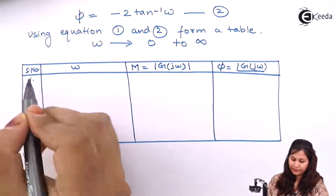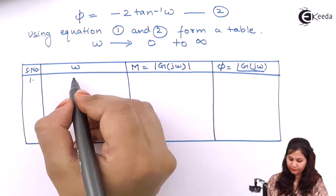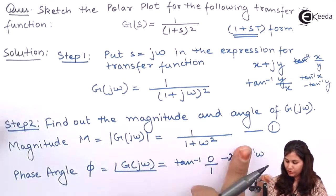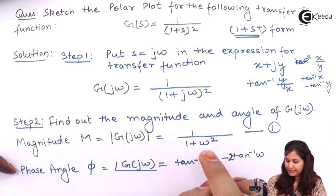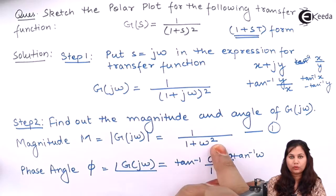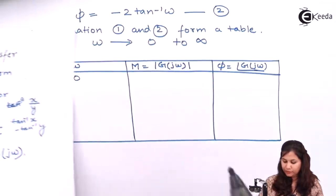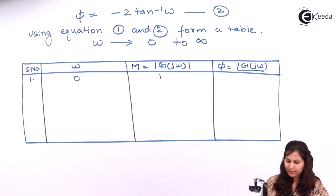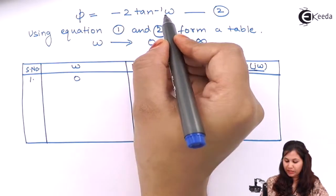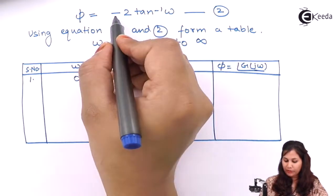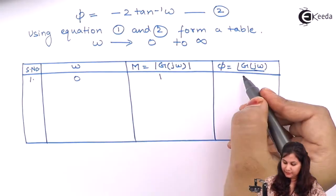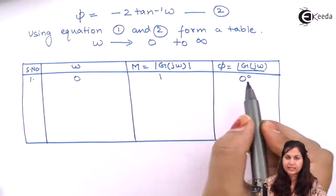Let's take the first value of ω as 0. For the magnitude, putting ω = 0 gives 1 / (1 + 0) = 1, so the magnitude is 1. For the phase equation, putting ω = 0 gives −2·tan⁻¹(0) = 0 degrees. So the phase angle is 0 degrees.